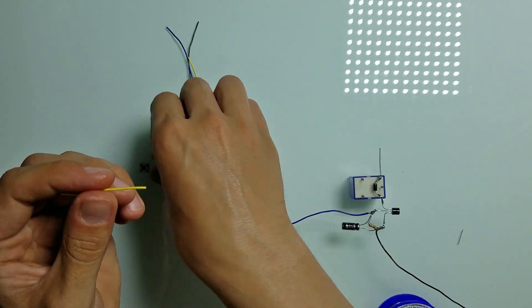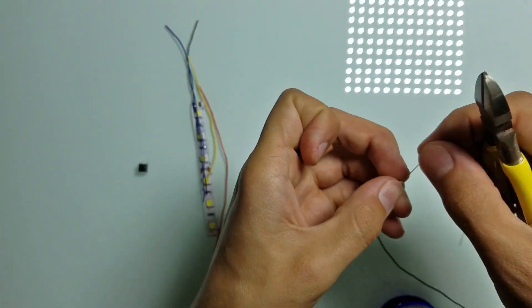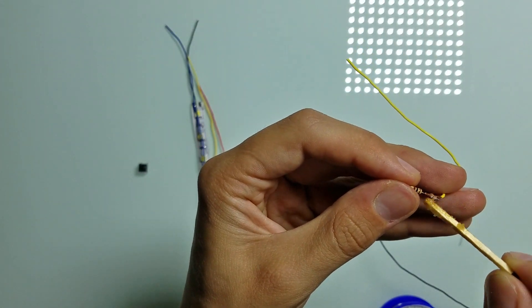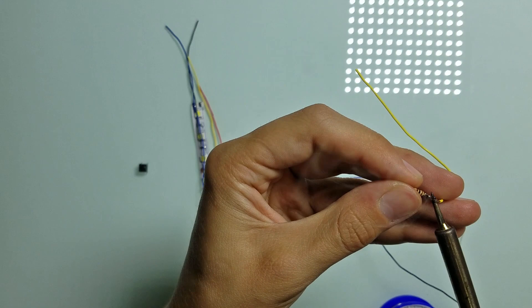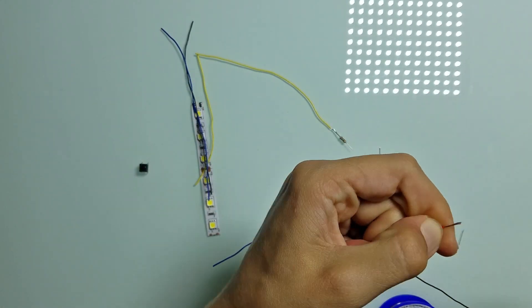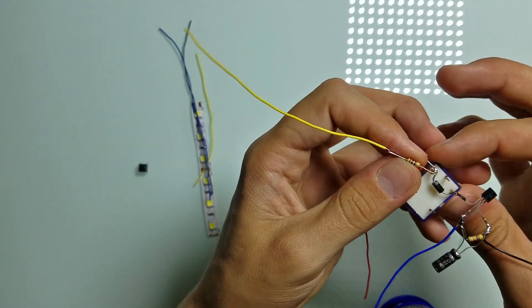Now let's solder a yellow wire to the 100 ohms resistor. Also let's connect a red wire to the other lead of the resistor. Now let's solder it to the diode and the coil lead of the relay.